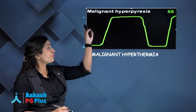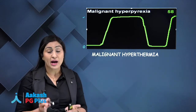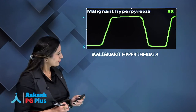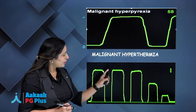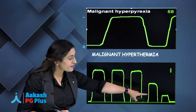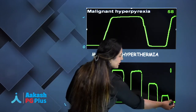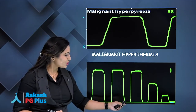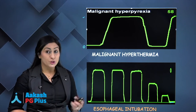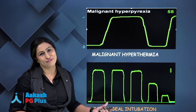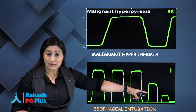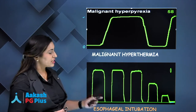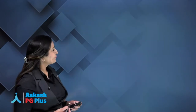When you see a capnogram with normal waveforms followed by CO2 dropping to zero after a few ventilations, be very wary — this means the tube has been placed in the wrong position, i.e., in the esophagus rather than the airway. Since no gas exchange occurs in the esophagus, CO2 stops coming out from the alveoli. This is esophageal intubation.